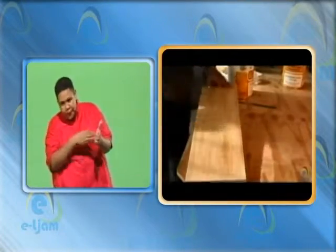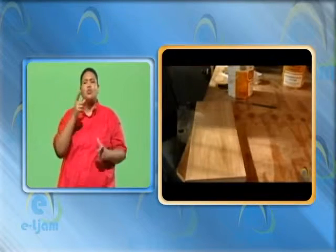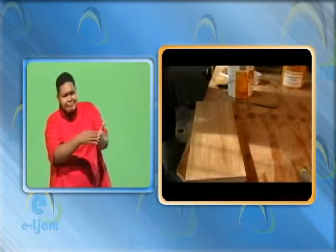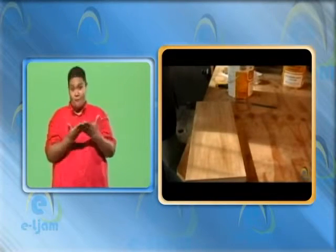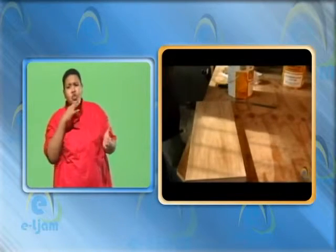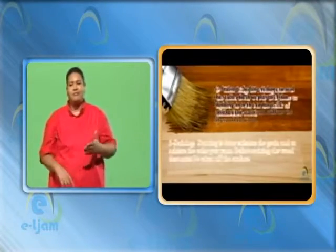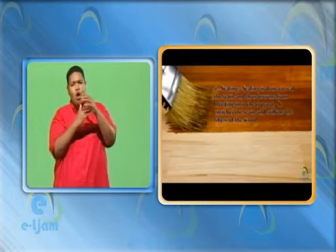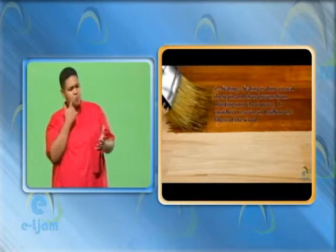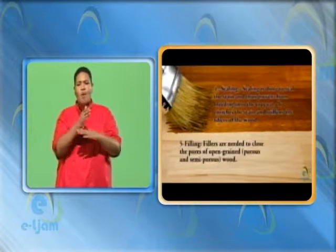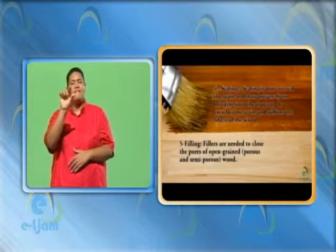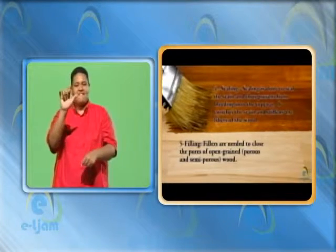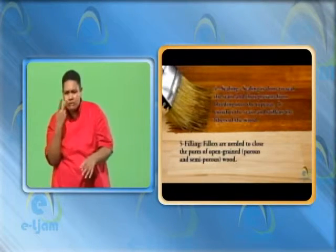Step 3: Staining. Staining is done to enhance the grain and to achieve the color you want. Before staining the wood, dust must be taken off the surface. Step 4: Sealing. Sealing is done to seal the stain and thus prevent it from bleeding into the top coat. It enriches the stain and stiffens the fibers of the wood. Step 5: Filling. Fillers are needed to close the pores of open-grained, porous and semi-porous wood.